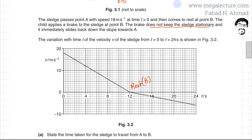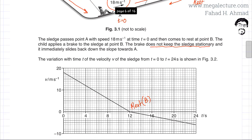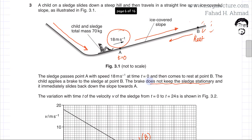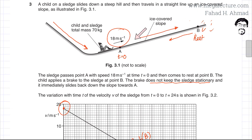Looking at the graph, the velocity is 0 at 12 seconds — that's when the sledge reaches point B. The sledge starts at 18 meters per second on the graph and gradually decelerates. The speed decreases until it reaches point B, where the velocity becomes zero.